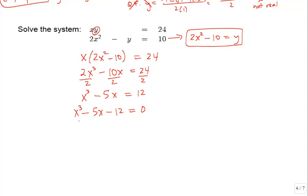To solve a cubic, it needs to factor somehow. Unfortunately this one doesn't fit any of our factoring strategies—there's no common GCF, reverse FOIL won't work because of the cube, and grouping doesn't apply with only three terms. So we're stuck algebraically and have to pull out the graphing calculator to proceed.